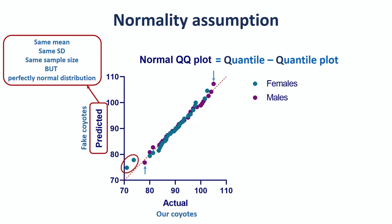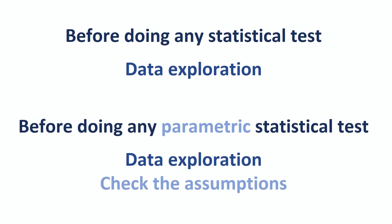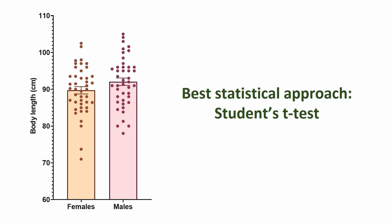As we can see, there are many ways to check out the first assumption. As for the second one, apart from the graphical approach, there are also statistical tests that can identify significant differences between group variances — these are run by default in PRISM 8 when we run a parametric test, so we will talk about it then. One last time: before doing any stats, we need to explore our data, and before doing any parametric statistical test, we need to check that the assumptions are met. For our coyotes, we did a good job with data exploration, so we can be pretty confident that a parametric approach is okay here — namely a Student t-test, which we will do together in another video. Thank you for listening, and don't forget: stats don't have to be scary.